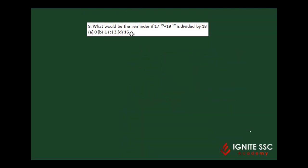The next question is: what would be the remainder if 17^19 plus 19^17 is divided by 18? This is what I told you - numerator and denominator plus or minus 1. In 99.99% of cases. So this can be written as (18-1)^19 plus (18+1)^17 whole divided by 18.